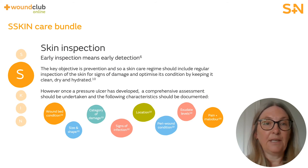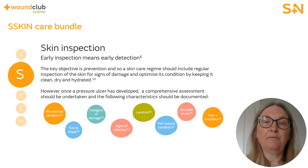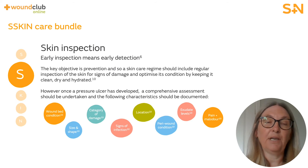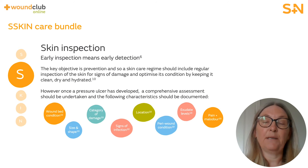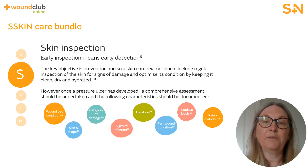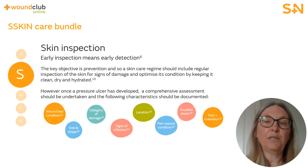Skin should be checked for changes in colour, temperature or texture. In patients with darker skin, redness is not always obvious, so practitioners should look for a change of colour in the surrounding skin. To test for early signs of skin damage, apply light finger pressure to the area for a count of three. If the area becomes white on removal and then returns to red, this is described as blanching and healthy skin. Discoloured patches not turning white when pressed denotes non-blanching erythema — a Category 1 pressure ulcer.